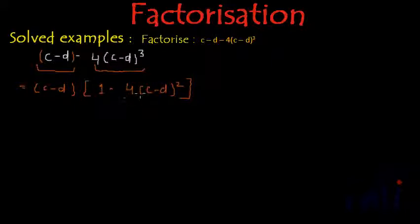And now this 4(c-d)² can be written as - let me write this (c-d) as it is, and then 1 minus can be written as [2(c-d)]².